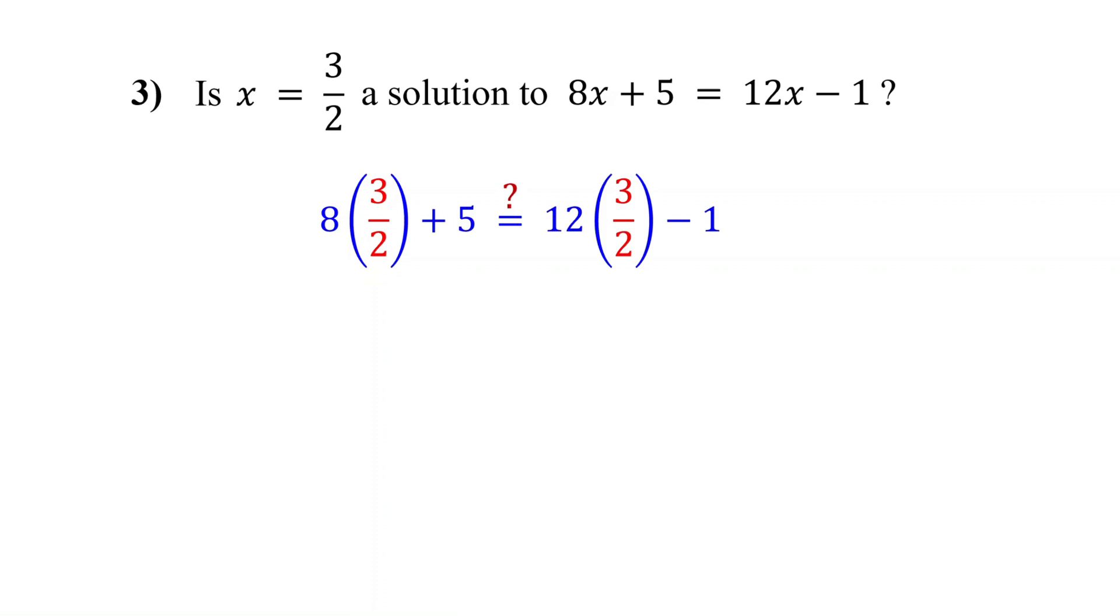On the left, 8 and 2 reduce to 4. Then 4 times 3 is 12. On the right, 12 and 2 reduce to 6. Then 6 times 3 is 18.